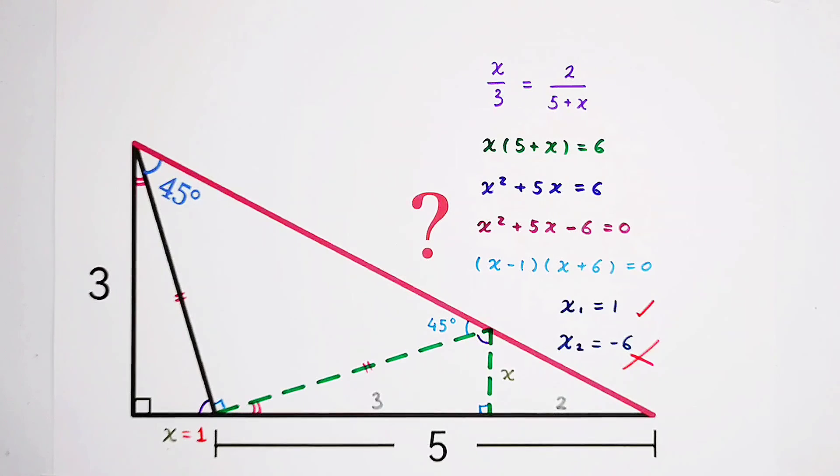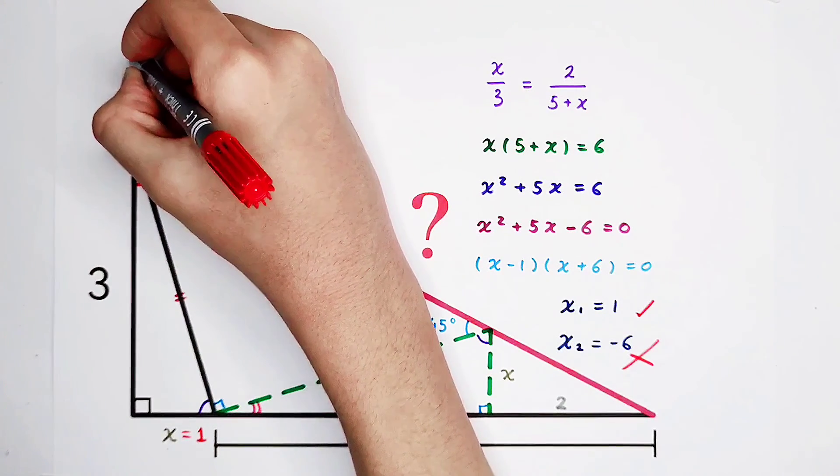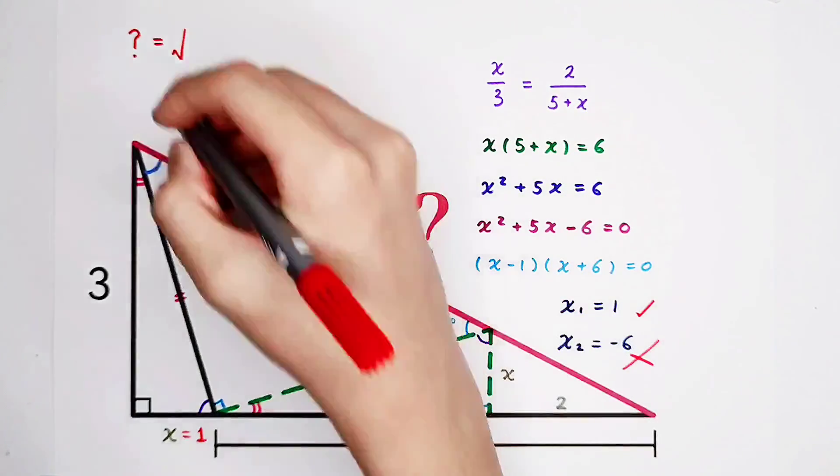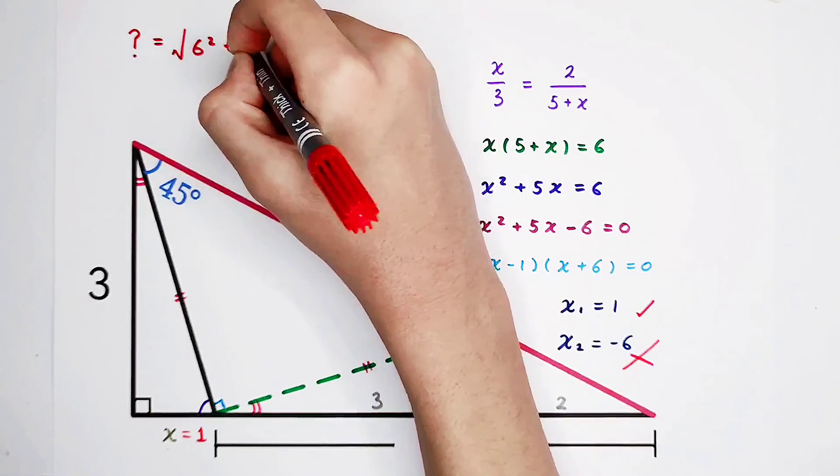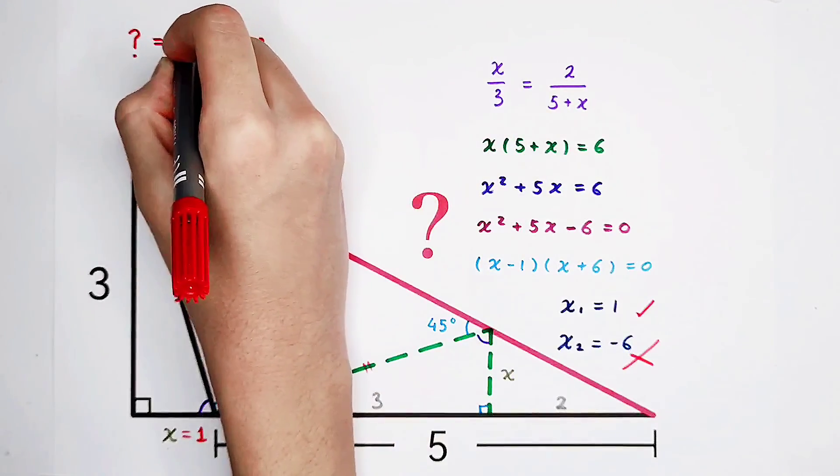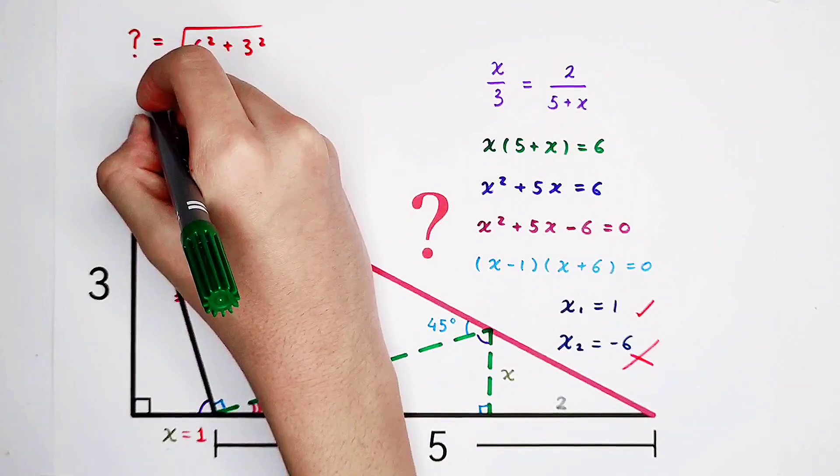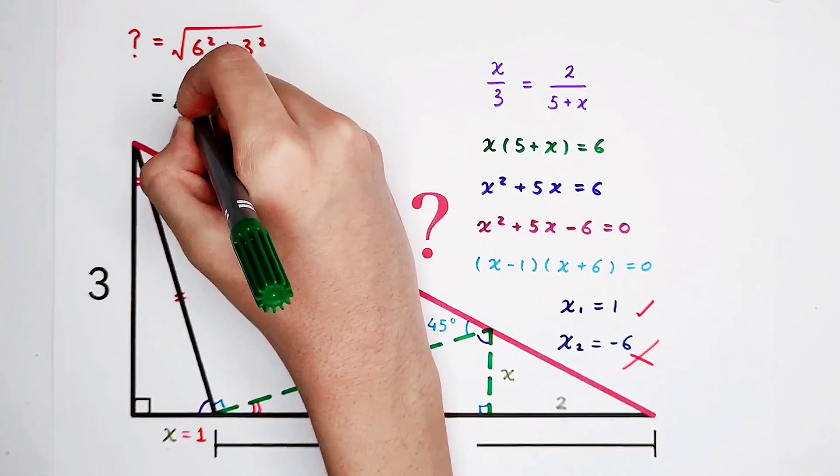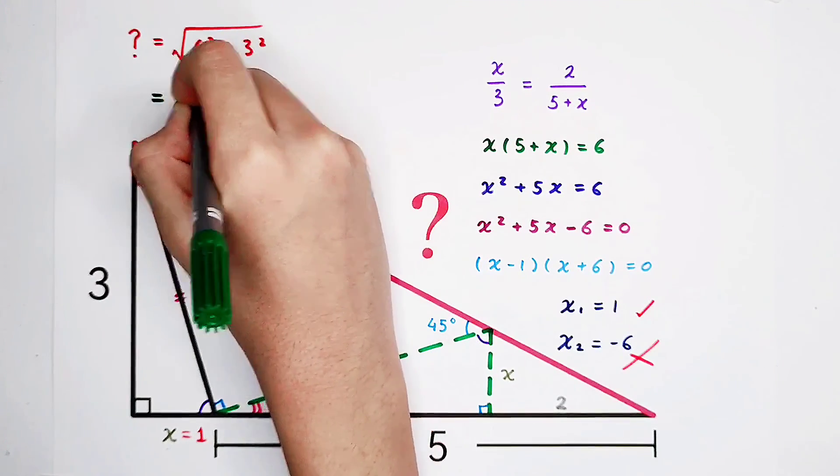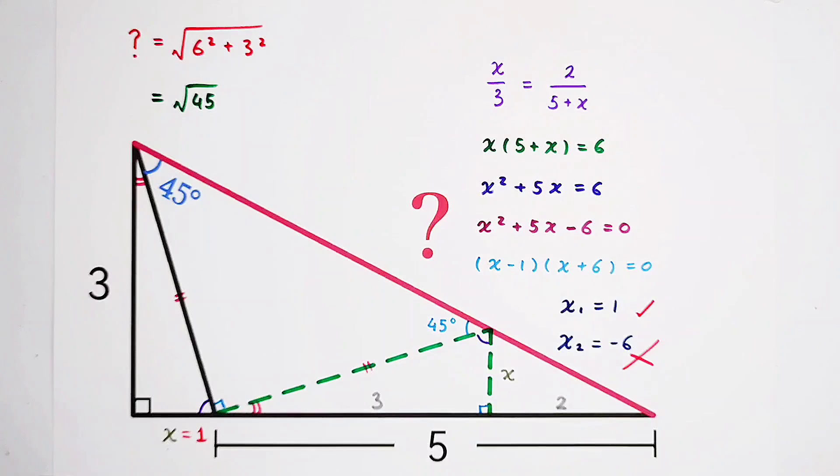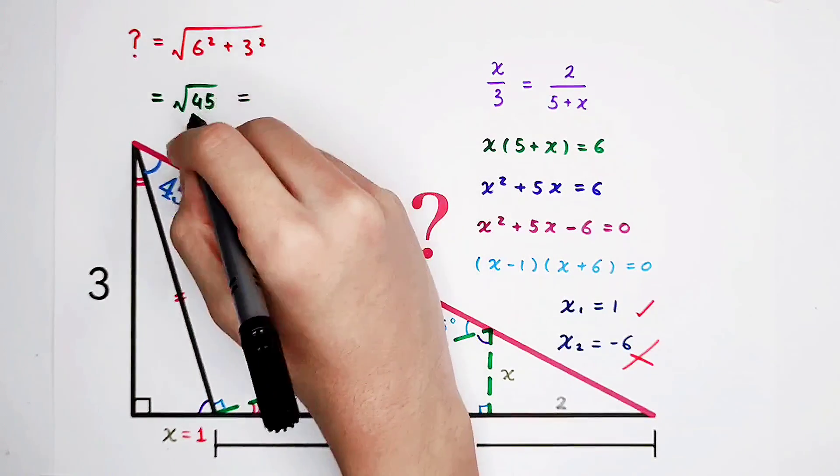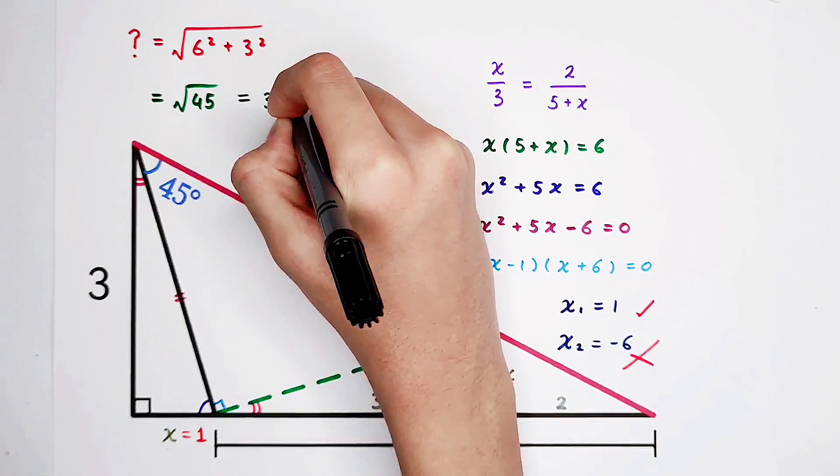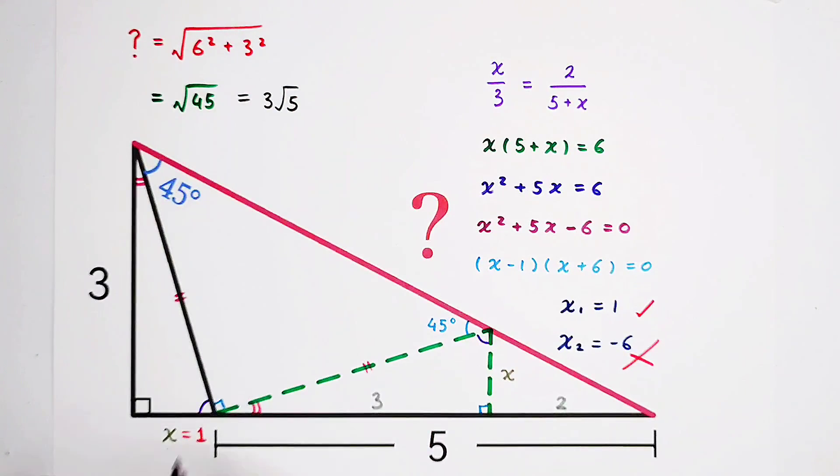By the Pythagorean theorem, question mark is square root of 6 squared plus 3 squared. 6 squared is 36. 36 plus 9 is 45. Square root of 45, it can be simplified further. And the answer is 45 is 9 times 5. So it is 3 times square root of 5. This is the answer.